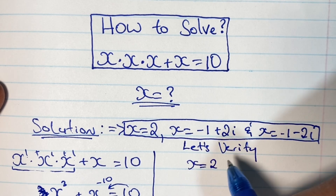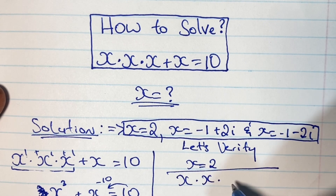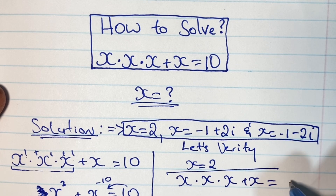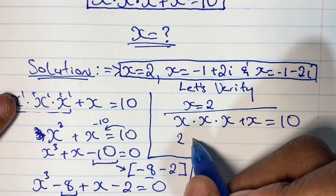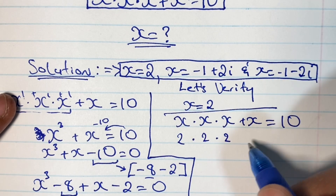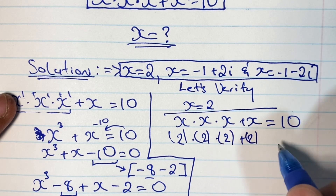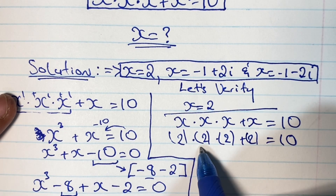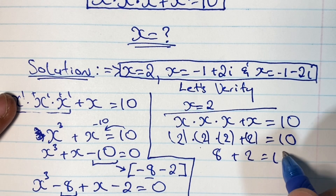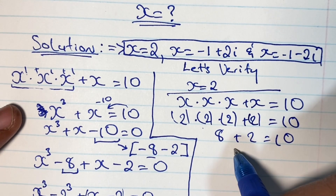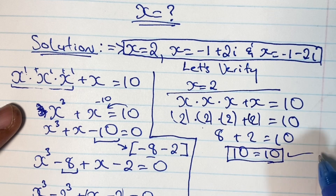We can verify our real solution by plugging x equals 2 back into the original equation. We have 2 times 2 times 2 plus 2 equals 10. Since 2 times 2 times 2 gives us 8, and 8 plus 2 equals 10, our real solution x equals 2 is confirmed to be true.